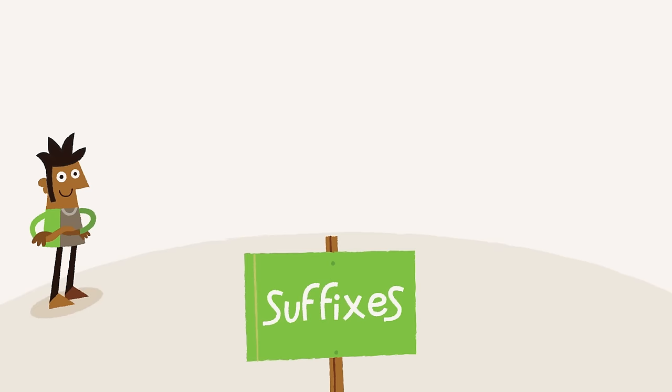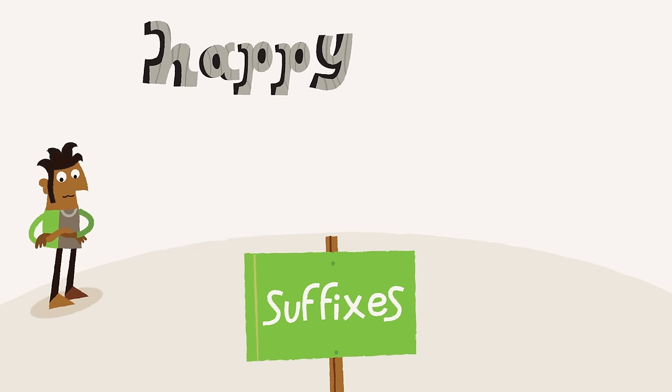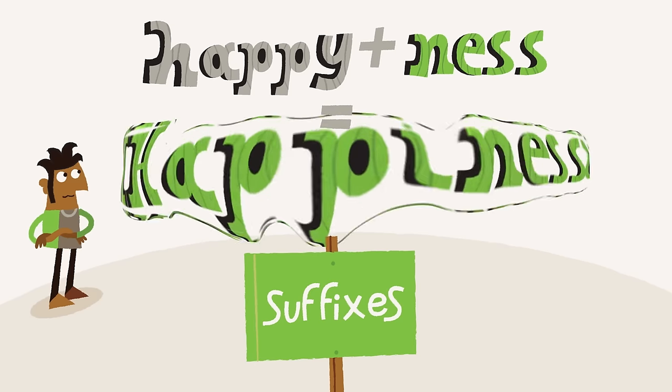Now let's look at some suffixes. Happy is an adjective. How can we make it into a noun? Simple. Just add the suffix -ness. Happy plus ness equals happiness.